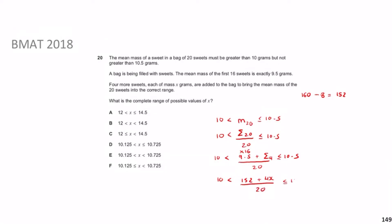Multiplying both sides by 20: the left inequality gives 200, so 152 + 4x > 200, and the right gives 10.5 × 20 = 210, so 152 + 4x ≤ 210. Subtracting 152 from both sides: 4x > 48 and 4x ≤ 58. Dividing both sides by 4 gives x > 12 and x ≤ 14.5.